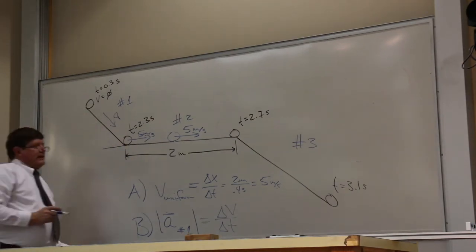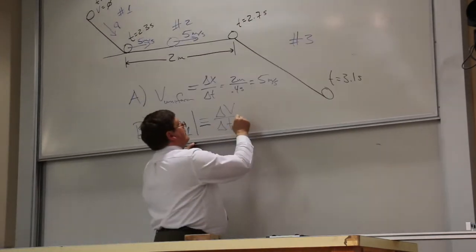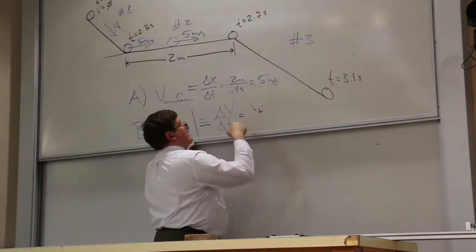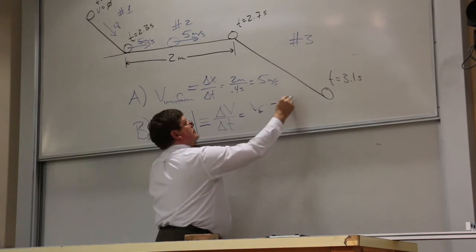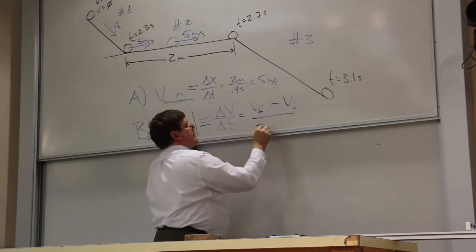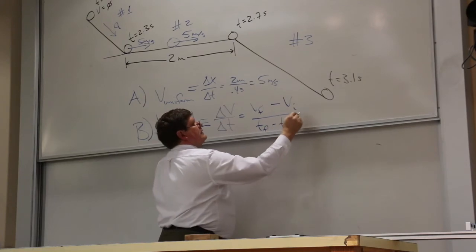So, if I use my operational definition here, this would be V final at the bottom of the ramp minus V initial at the top of the ramp divided by T final minus T initial.